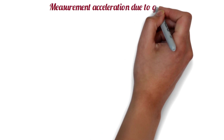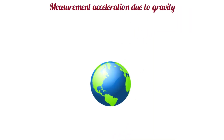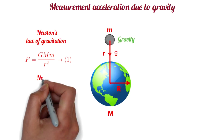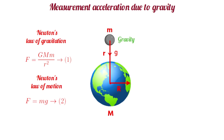Measurement of acceleration due to gravity. Let us consider the mass of the Earth is capital M, and the radius of the Earth is capital R. If an object of mass small m falls freely at a distance of R from the center of the Earth due to the gravitational force, then according to Newton's law of gravitation, F is equal to GmM divided by R square. And also if the object gained an acceleration g due to the force F, then according to Newton's law of motion, F is equal to mg.